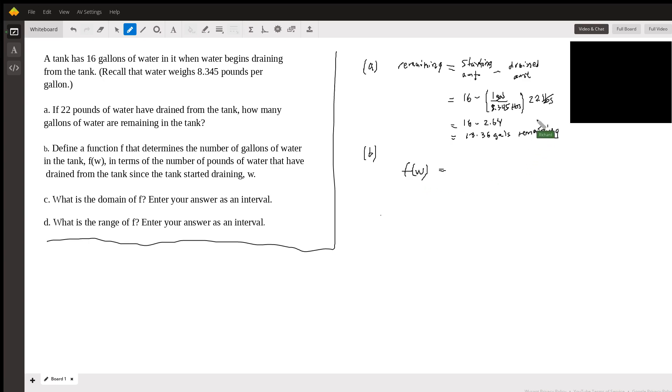And so you can see that's where our weight is. So it's going to be 16 minus 1 over 8.345 times W. W is the number of pounds of water that have been drained, which was 22 in the example up here. Now we're just substituting that with a variable. So that's our function.